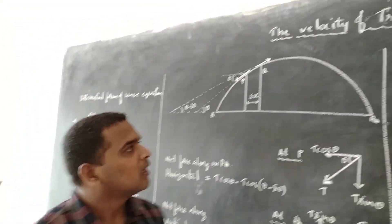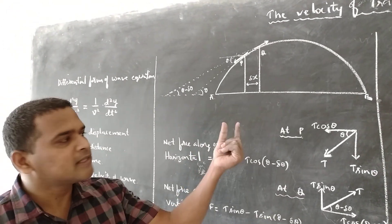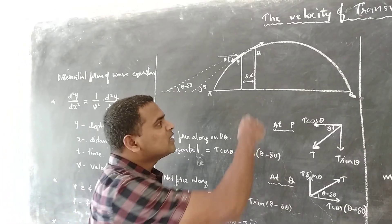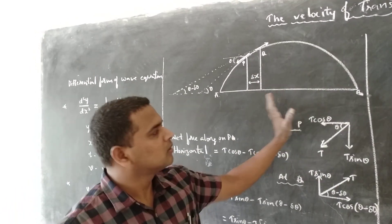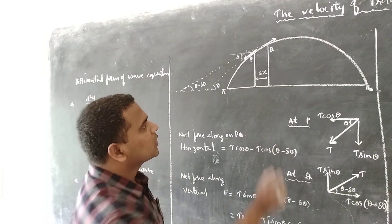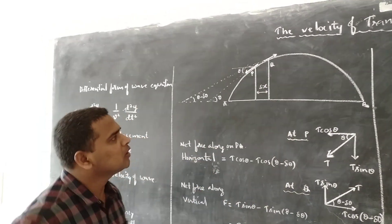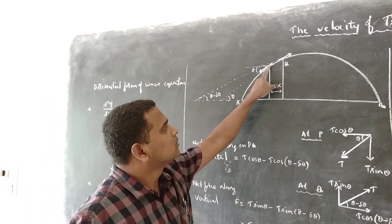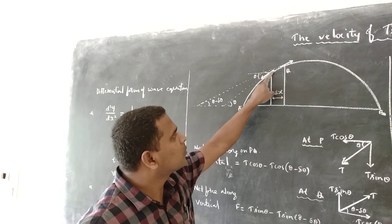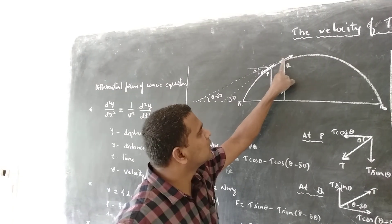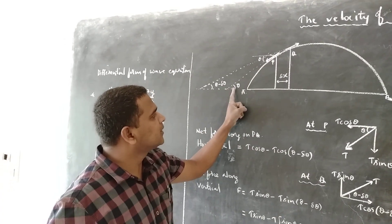Let T be the tension on the string, that is the force on the string. Let us consider a very small section of the stretched string. When the string is plucked in the middle, the disturbance sets up transverse waves along the length of the string and they travel along the length. Now we come to the small portion PQ of length Δx on the string. The tension at P acts along the length of the string and is tangential to the string; even at point Q it is tangential. At P, let T be tension and let it make an angle θ with respect to the horizontal.